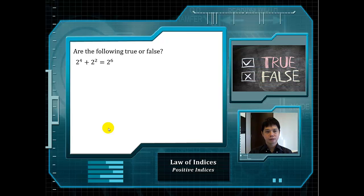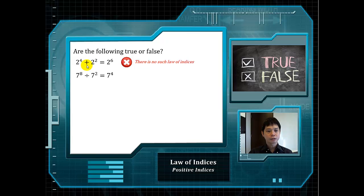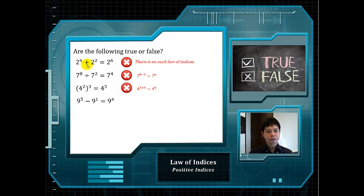Are the following true or false? The first statement is actually false, because the operator here is addition — the first law of indices only works for multiplication. The next is false because 7 to the power of 8 divided by 7 to the power of 2 requires subtracting the powers, giving 7 to the power of 6. The next is also false — we should multiply the powers, not add them. There is no such law of indices, so that is false. And the last is false: we should add up the powers instead of multiplying.